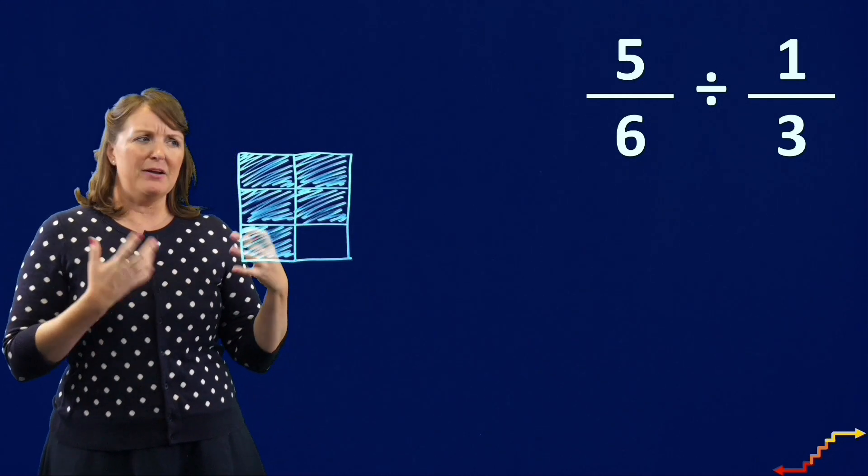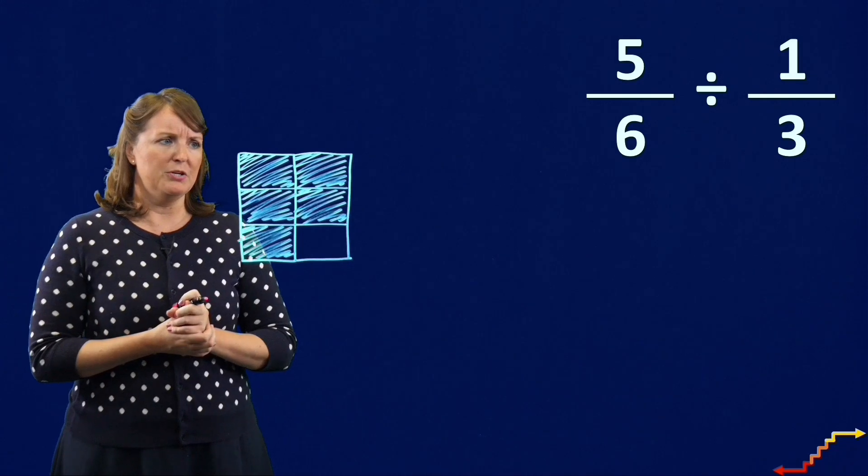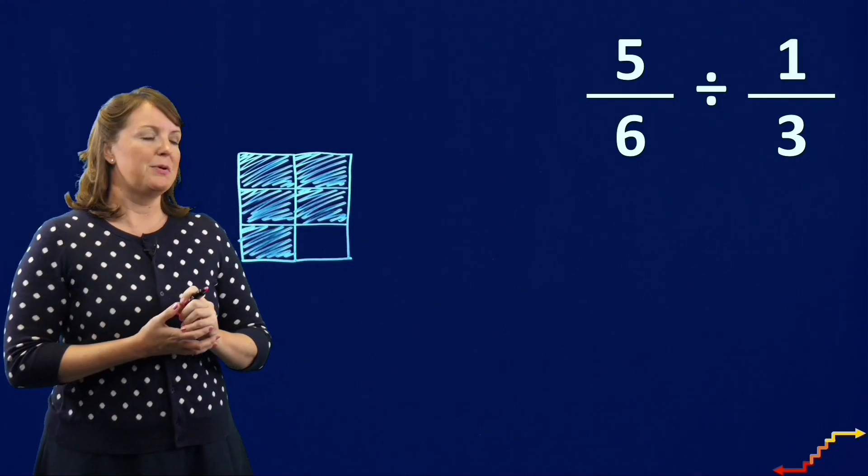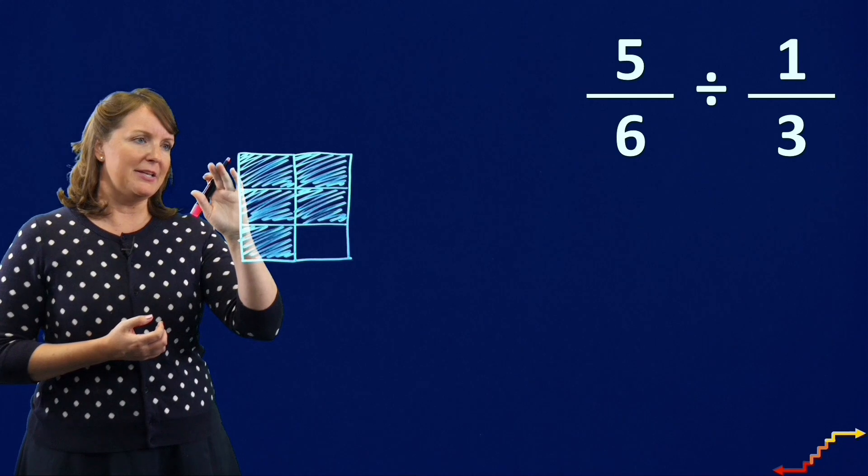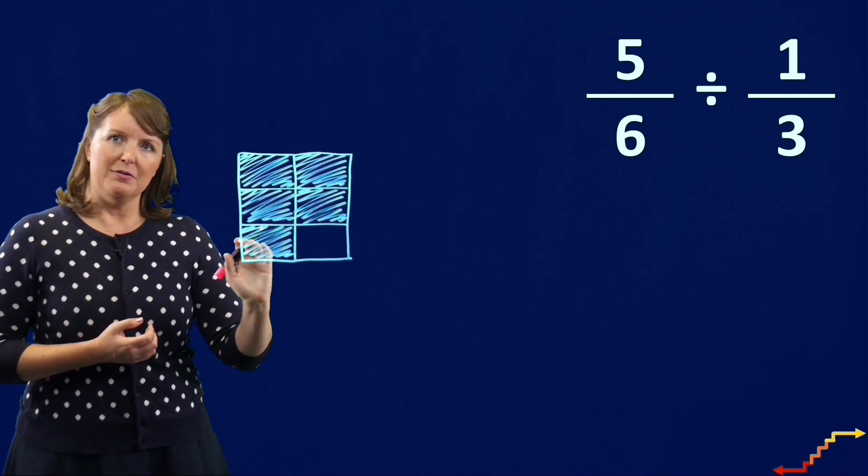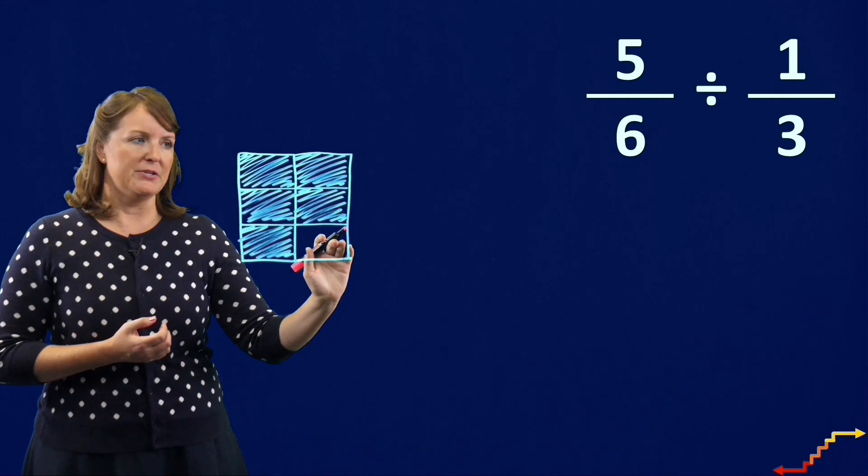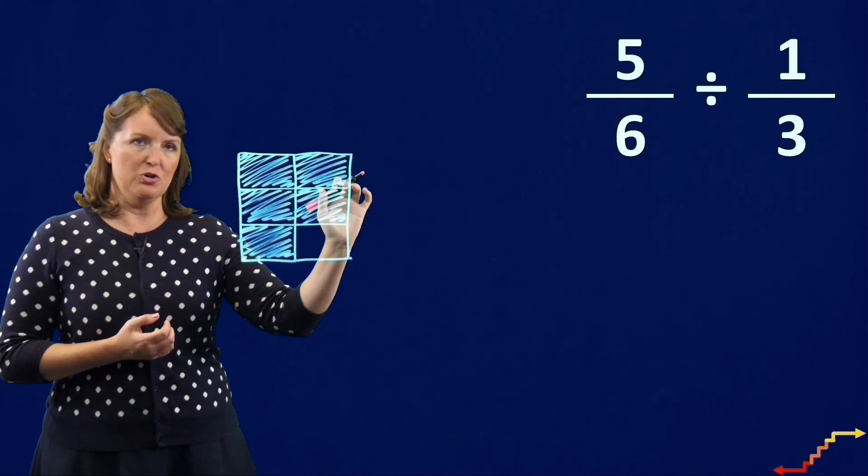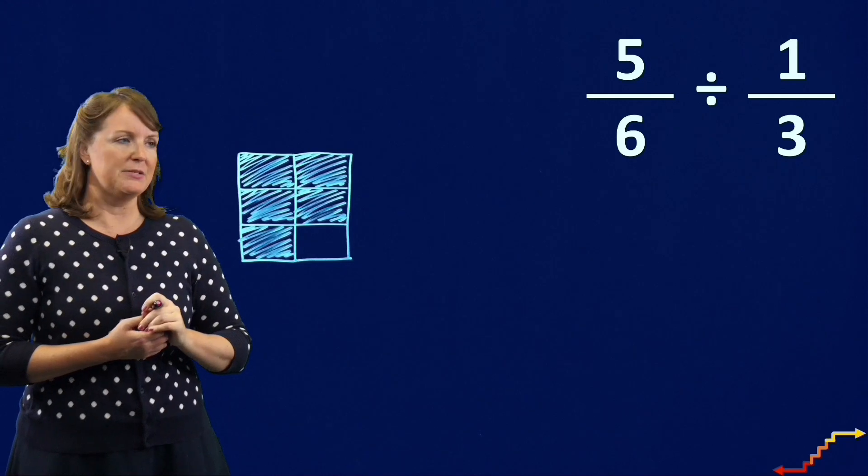And I want to figure out how many one-third groups we can make if we have five-sixths. So I have to think about, well, what does a one-third group look like? Well, on this visual, I kind of set this one up nicely, I can see that I have one, two, three equal parts. So a one-third group is really two of these one-sixths pieces.